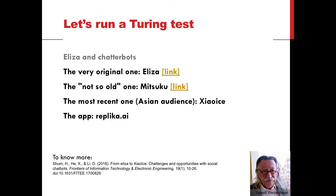I want you to reflect on these ideas and to give them a go. The picture below is from Joseph Weizenbaum. He was only ten years later than Alan Turing, but he was really taking it seriously — he was trying to produce a machine that could talk, and he developed Eliza, which is one of the very first chatterbots.